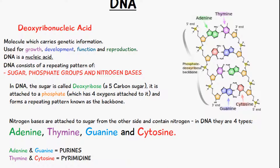Adenine and guanine are purines, meaning they have two carbon rings — you can see one ring here and another here for each of them. Thymine and cytosine are pyrimidines, so they have just one carbon ring each, as you can see here.